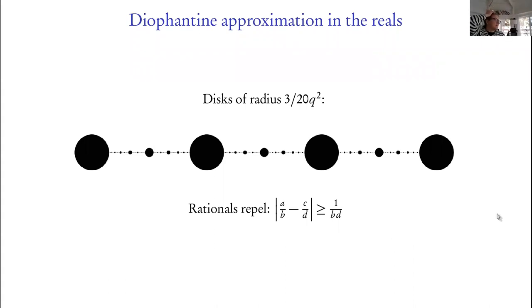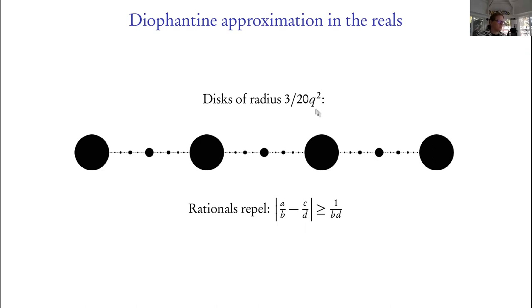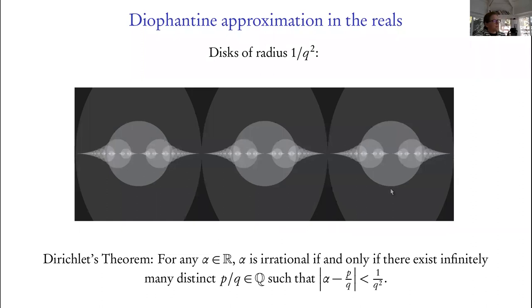With this observation, we can go back to the story of Diophantine approximation. In the rationals, this picture is an illustration of how rational numbers sit in the real line. If I draw disks of radius proportional to 1/q² for each rational p/q, you notice visually that they sort of repel one another — two large disks can't be very close to one another. That's a simple observation: if you have two distinct rational numbers, there is a minimum distance between them governed by their denominators.